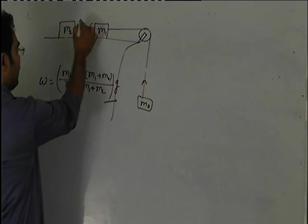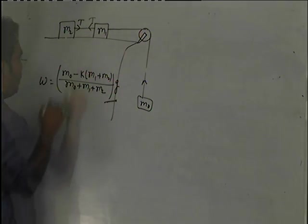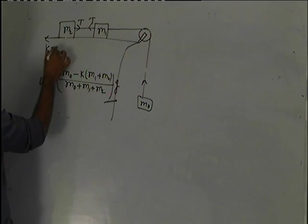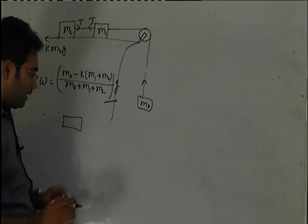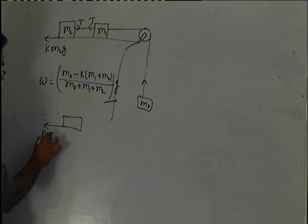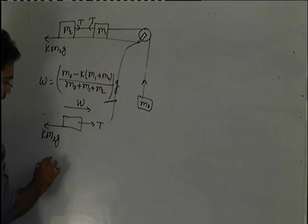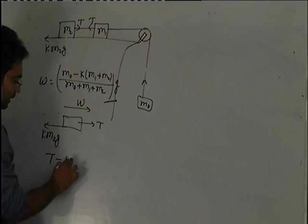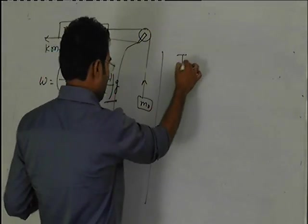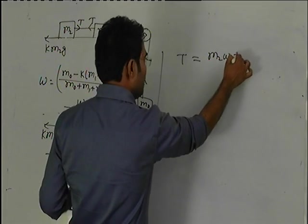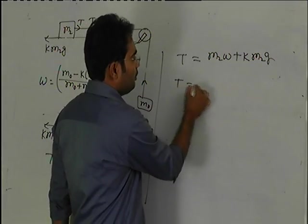In the second part we have to calculate tension between M2 and M1. Here KM2G friction acts on M2, we use free body diagram. So KM2G friction will be taken, tension will be taken and acceleration will be taken. Dynamic equation will be T minus KM2G equal to M2 into W.